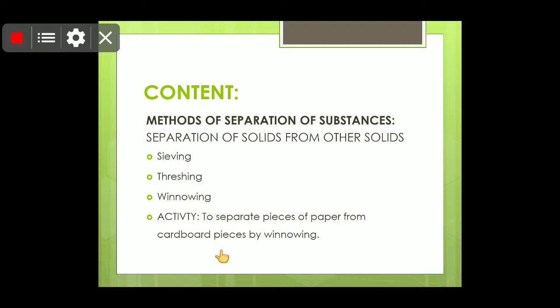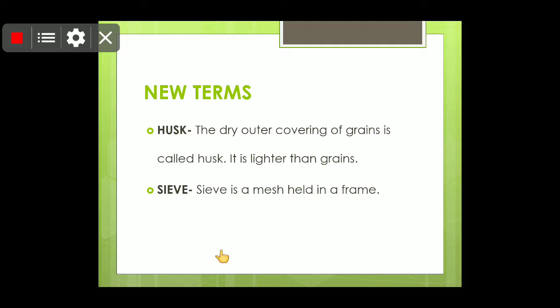We are also going to do an activity in this class. The objective of the activity is to separate pieces of paper from cardboard pieces by winnowing. Before moving further, you should know two new terms: husk and sieve.